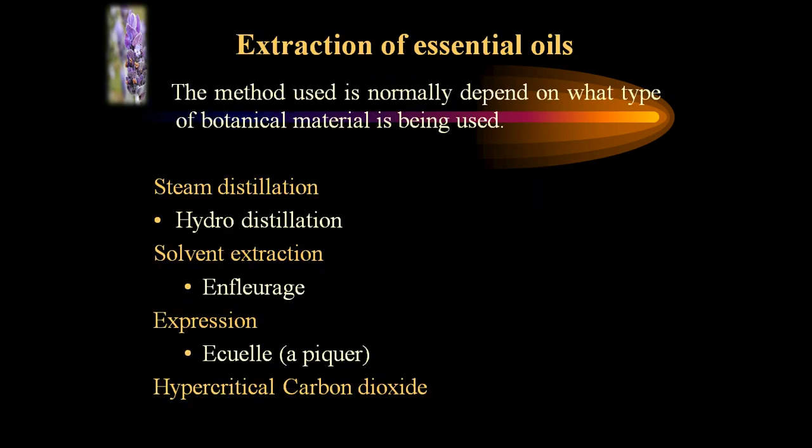According to the extraction process of essential oils, the method used normally depends on what type of botanical material is being used. Methods include steam distillation, also called hydro-distillation, using the Clevenger apparatus; solvent extraction; expression; enfleurage; and supercritical carbon dioxide extraction.